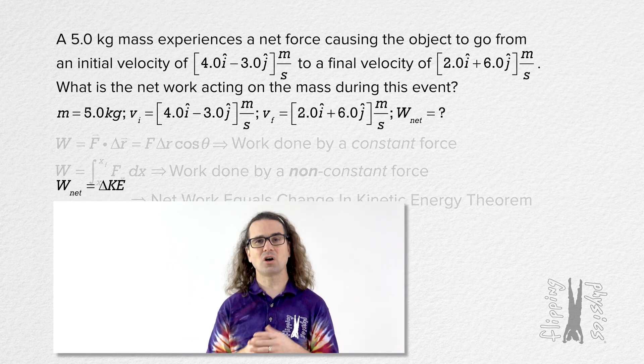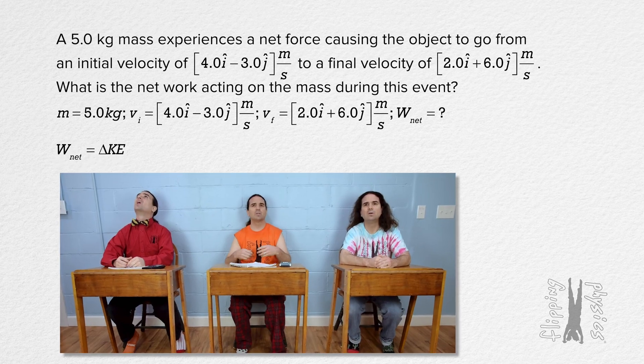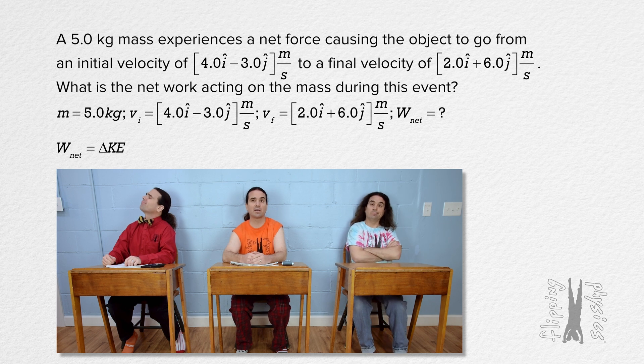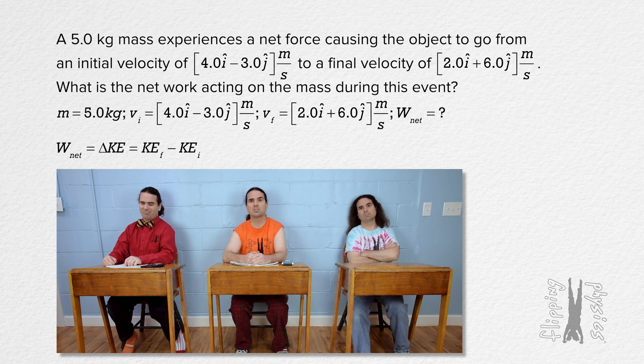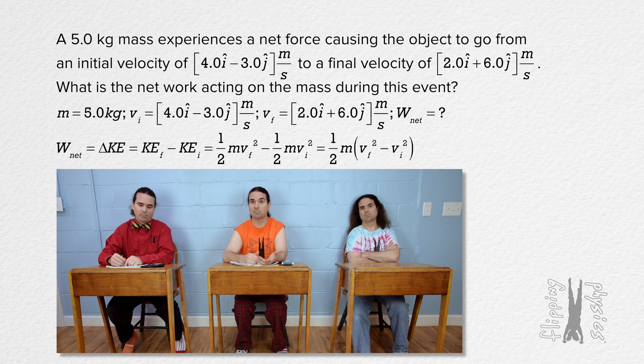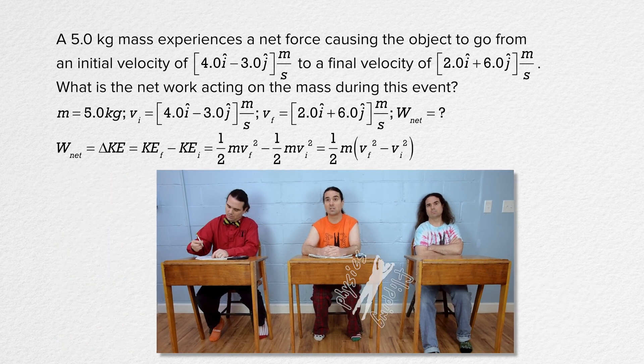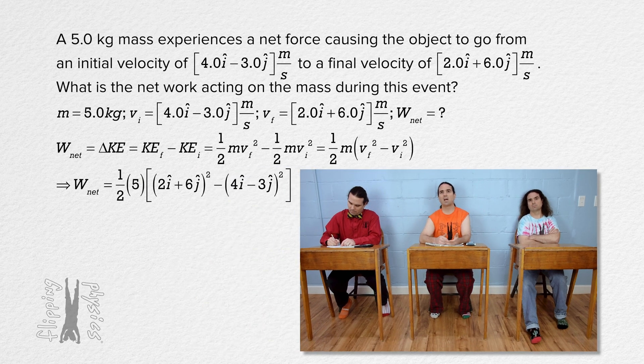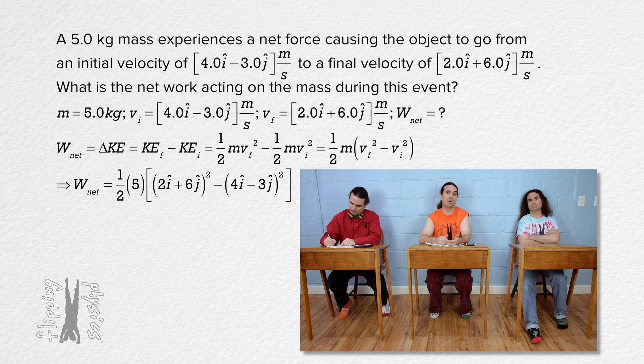Alright, I prefer to call this equation the network equals change in kinetic energy theorem rather than the nebulous work energy theorem because too many of my students forget it involves the network and the change in kinetic energy. Bobby, please solve the problem. Okay, well, we know network equals change in kinetic energy or kinetic energy final minus kinetic energy initial or 1 half mass times velocity final squared minus 1 half mass times velocity initial squared. We can factor out 1 half and mass and substitute in our values to get 1 half times 5 times the quantity 2i plus 6j quantity squared minus the quantity 4i minus 3j quantity squared.